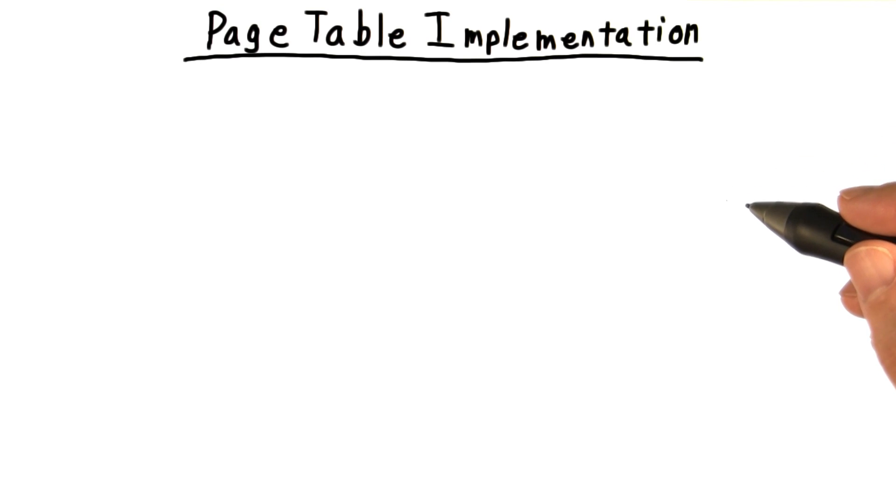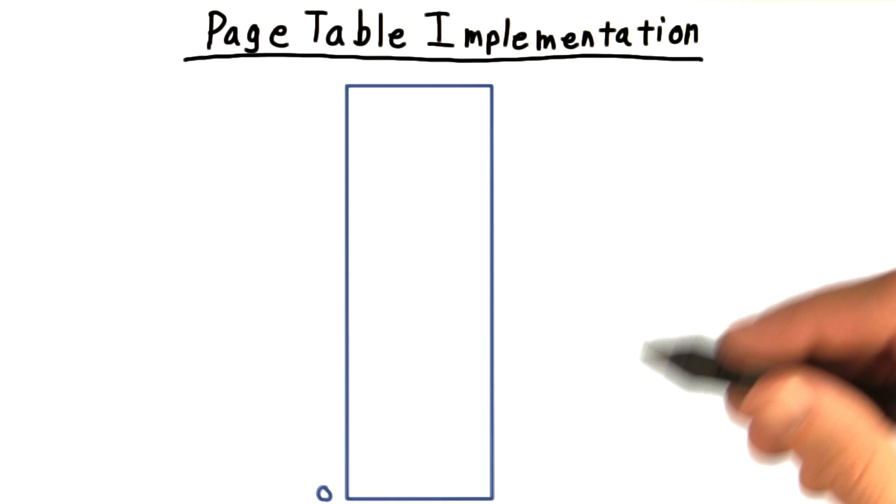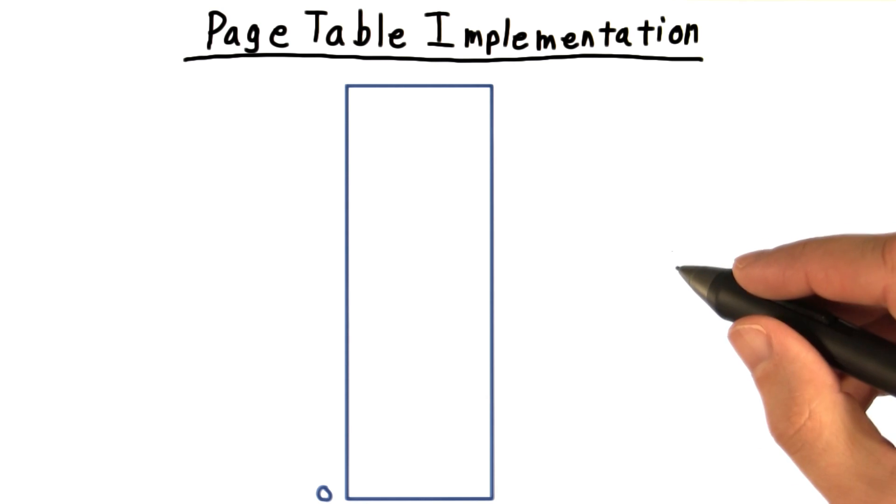Now we consider the implementation of the all important page table data structure, which needs to translate virtual page numbers into physical page frames. Virtual page numbers start at zero and then go up by one. So the most straightforward way to do this would be to create a giant array that is the number of pages long. Let's see how this strategy might work.